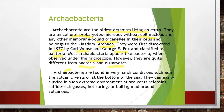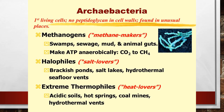Archibacteria can survive in harsh conditions such as volcanic vents or at the bottom of the sea where other organisms cannot survive. They can survive at sea vents releasing sulphide-rich gases, hot springs, and boiling mud around volcanoes. They are classified under three states depending on the habitat where they survive. Methanogens are the methane makers, seen in swamps, sewage mud, and animal guts.